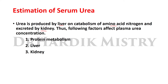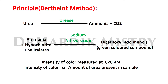The following factors affect plasma urea concentration: protein metabolism, liver, and kidney. The principle of the Berthelot method: in the presence of urease enzyme, urea is converted to ammonia and carbon dioxide.